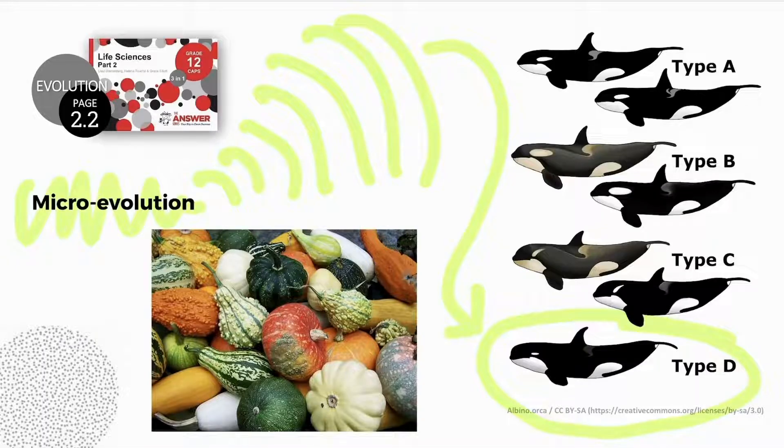For example, a type D killer whale was recently rediscovered and proposed as a new species by some scientists.